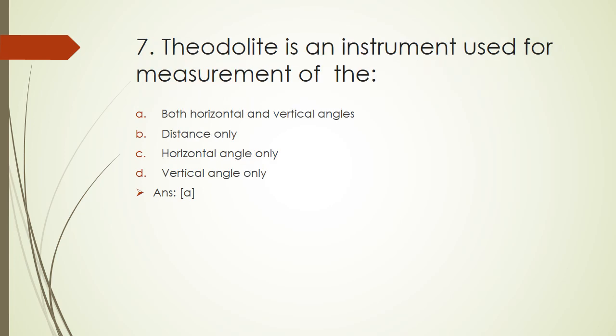Question 7: Theodolite is an instrument used for measurement of: both horizontal and vertical angles, distance, only horizontal angle, or only vertical angle. The right answer is both horizontal and vertical angle. Theodolite is used for measurement of horizontal and vertical angles.